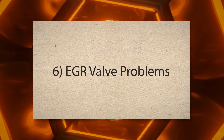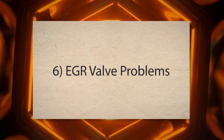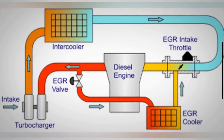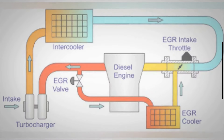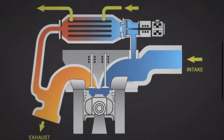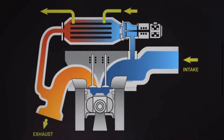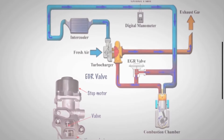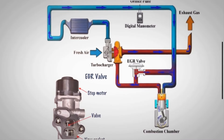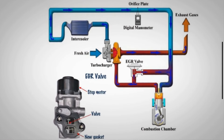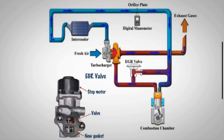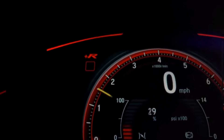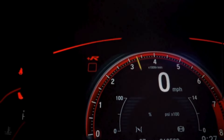6. EGR Valve Problems. The EGR valve of your vehicle recirculates exhaust gases back into the engine to reduce emissions. If it's stuck open, too much exhaust gas enters the combustion chamber, which disrupts the air-fuel mixture. If it's stuck closed, your engine might overheat or have too much oxygen, causing idle issues.